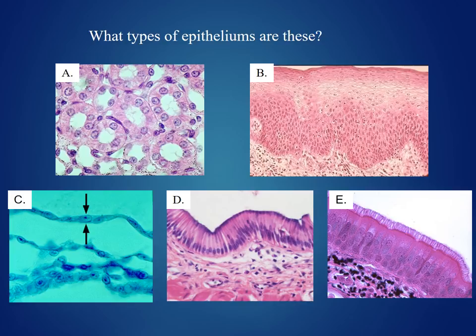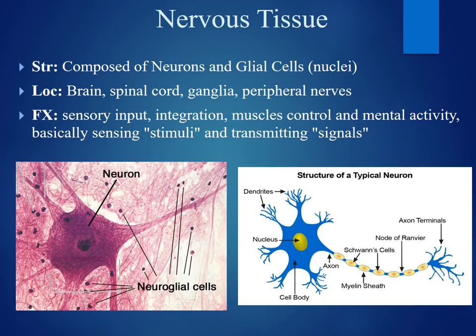The final image, E, also has a column-like cell and this appears to be pseudostratified. We see cilia on the apical surface there, and this is an epithelial tissue. So what we have is pseudostratified ciliated columnar epithelium for that last image.